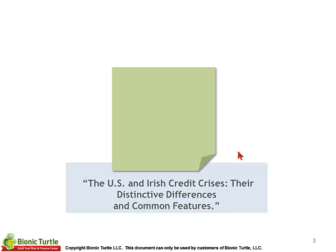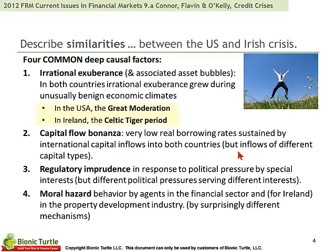First, the U.S. and Irish credit crises — their differences and commonalities. In terms of similarities between the U.S. and the Irish crisis, the paper identifies four common deep causal factors. The first is that they both had in common irrational exuberance and the associated asset bubble. The authors say this irrational exuberance grew out of an unusually benign economic climate in the U.S.A., which some referred to as the great moderation.